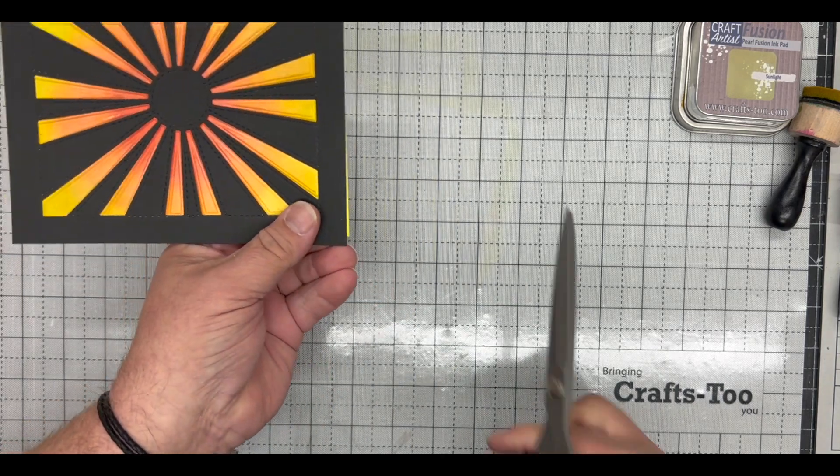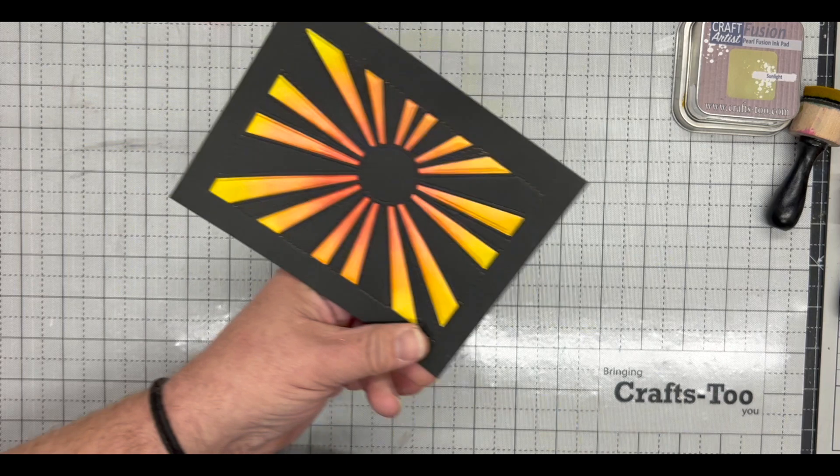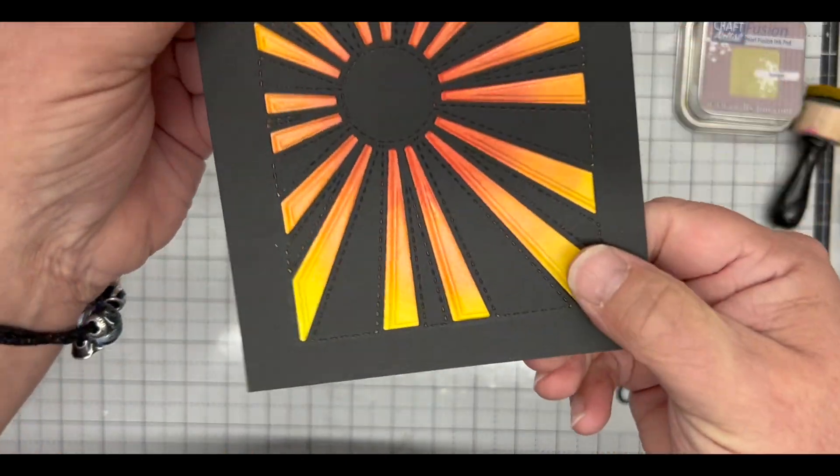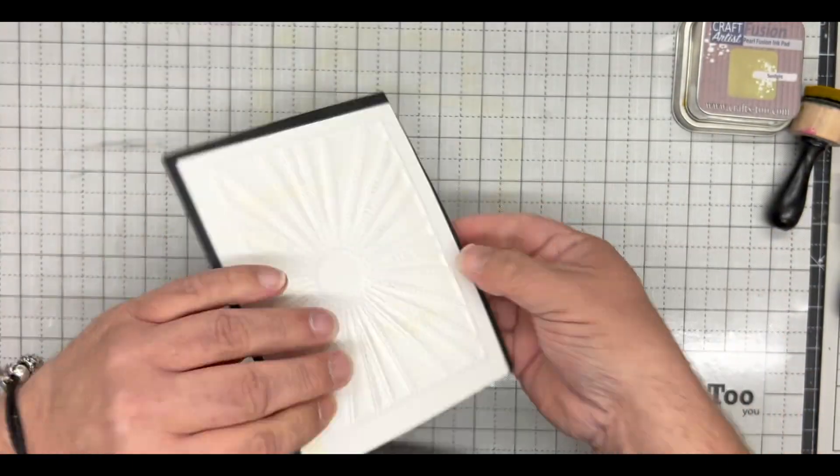Any excess can be trimmed off with a guillotine trimmer or a pair of scissors. Just trim that down, and you'll see there then we've got that quilted look. Each piece is quilted in.